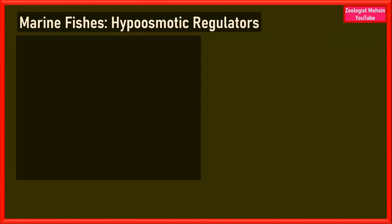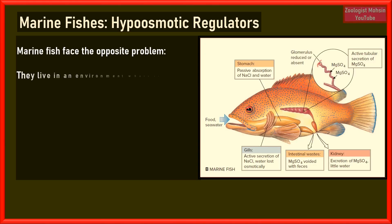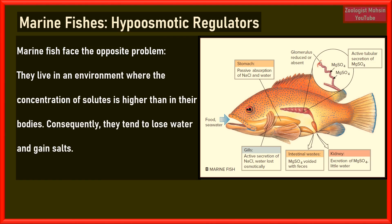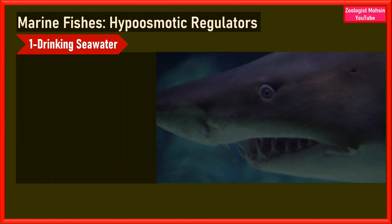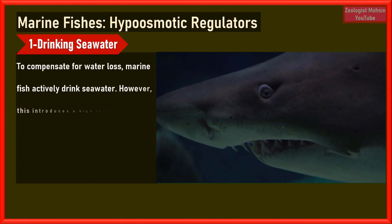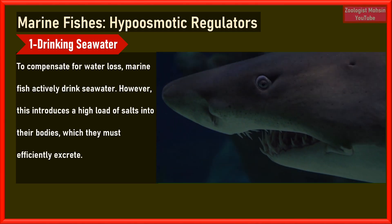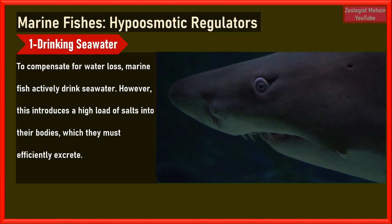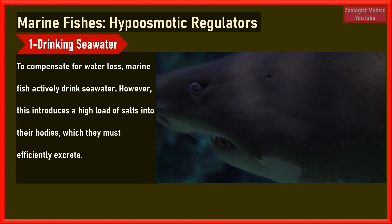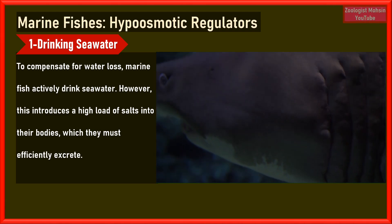Now let's talk about marine fishes, which are hypoosmotic regulators. Marine fish face the opposite problem: they live in an environment where the concentration of solutes is higher than in their bodies. Consequently, they tend to lose water and gain salts. One mechanism marine fish have evolved is drinking seawater to compensate for water loss. However, this introduces a high load of salt into their bodies which they must efficiently excrete.